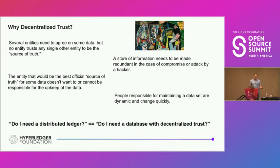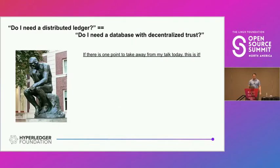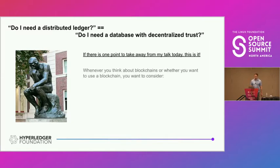If you take away anything today — the question you should ask is: do I need a distributed ledger? You should ask: do I need a database with decentralized trust? If you need decentralized trust, you need a blockchain. If you don't, then you probably don't need a blockchain.